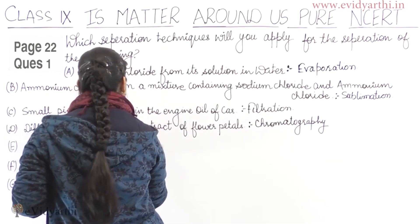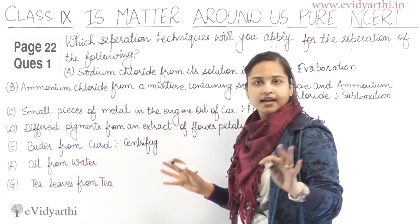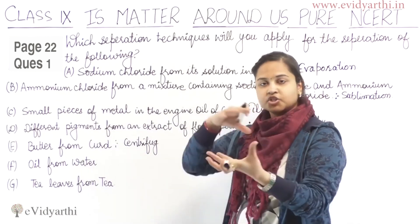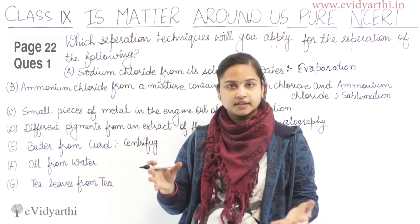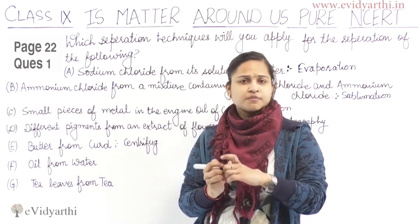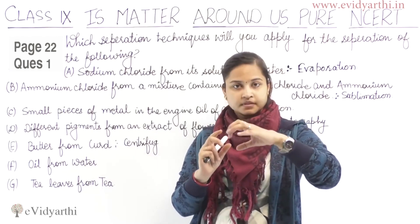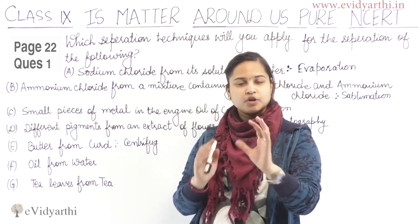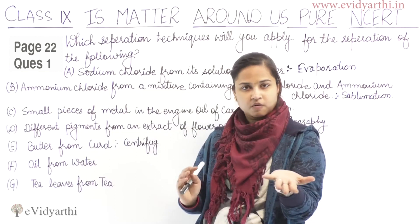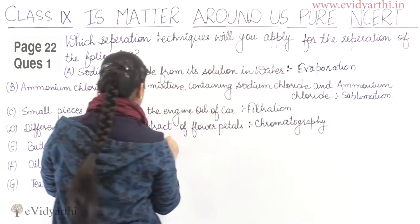Centrifugation — you must have seen mothers doing this at home. Extracting butter from curd is a common household task. They put curd in a mixer or churner, add some cold water, spin it in the machine, and then butter comes out. The curd is chilled and spun in the mixer, and butter separates out. So butter from curd — the process is centrifugation, based on the principle of density.